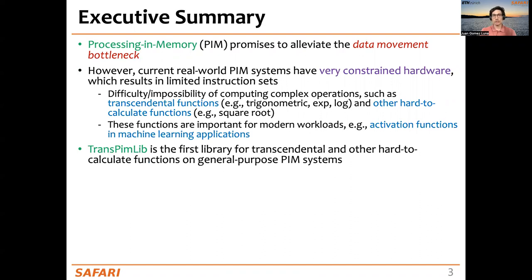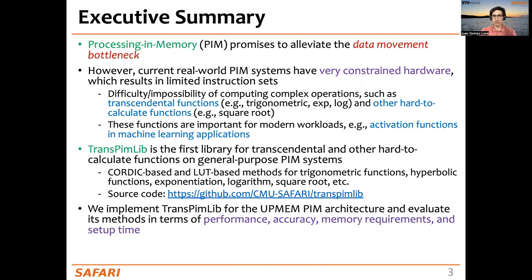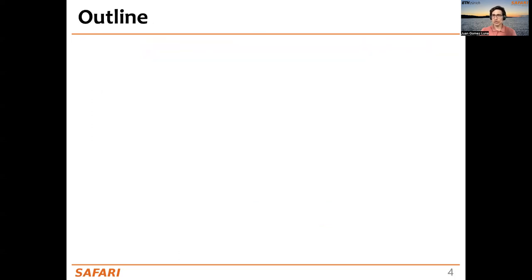TransPIM-Lib is the first library for transcendental functions and other hard-to-calculate functions on general-purpose processing in memory systems. It uses CORDIC-based and LUT-based methods for trigonometric functions, hyperbolic functions, exponentiation, logarithm, square root, etc. TransPIM-Lib is open source, and we have implemented the first version for the UPMEM PIM architecture, evaluating its methods in terms of performance, accuracy, memory requirements, and setup times — also with three real-world workloads: Black-Scholes, sigmoid, and softmax.